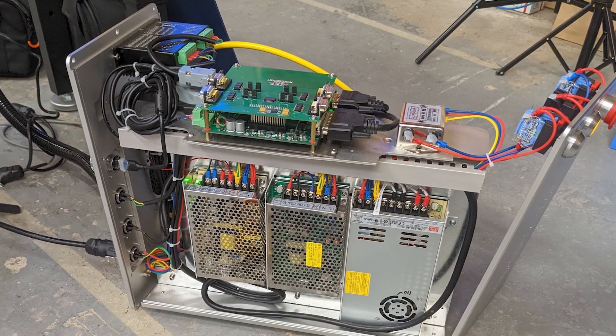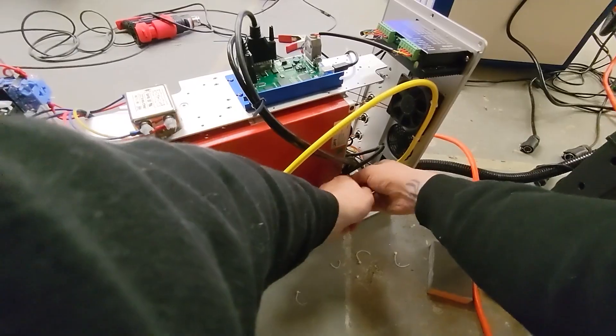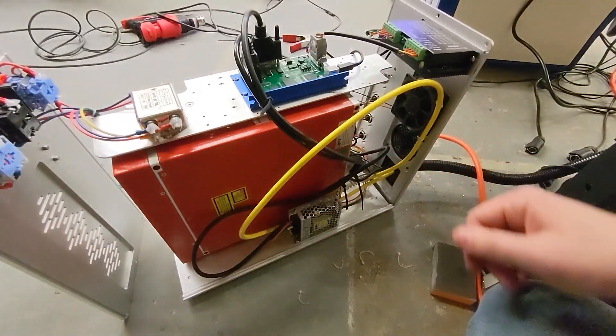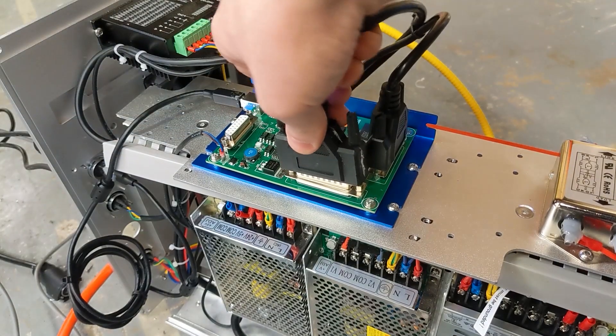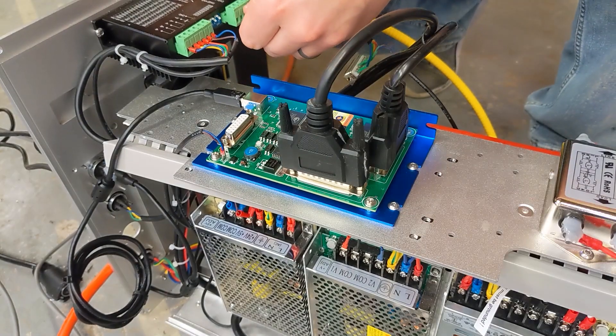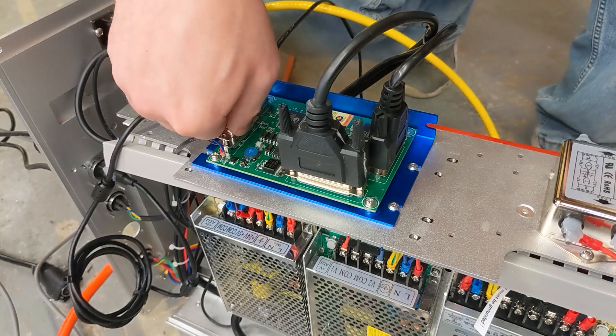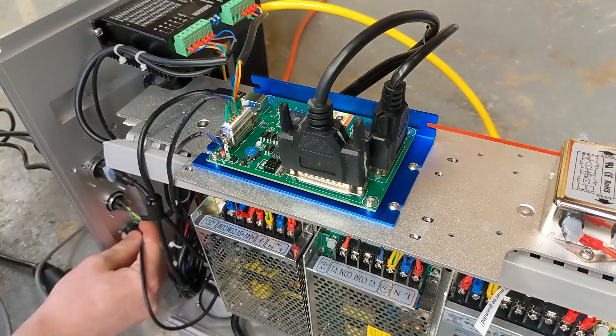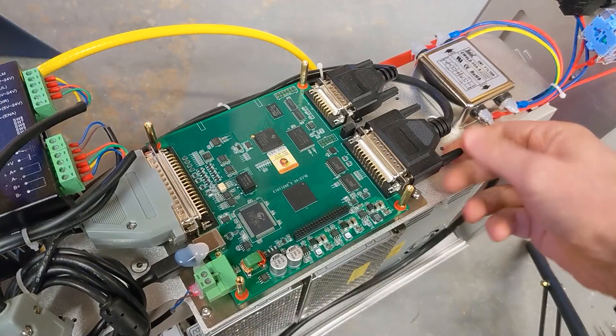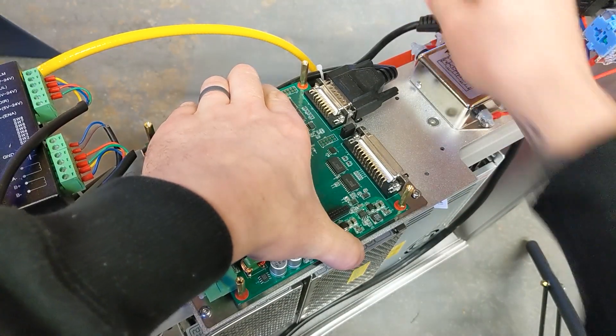I got this unit before Lightburn for Galvo was released and so EZCAD3 was shipped with the machine. One thing that speaks volumes about the build here is how easy it was for me to downgrade this unit from EZCAD3 to an EZCAD2 board once news of Lightburn broke. I did it without having to trace any wires, and there's plenty of space for the controller on top of the center plate. Naturally, the controllers are 100% genuine BJJCZ.